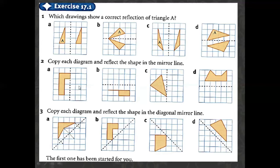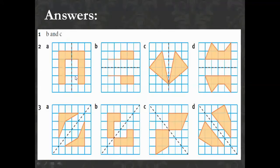Question two: how do you draw a reflection? Whatever is on one side, you draw the same thing on the other side. Here is a vertical mirror line, here is a horizontal mirror line. If anything is on one side, you just turn it completely and draw the same shape on the other side. If the mirror line is diagonal, you apply the same principle.